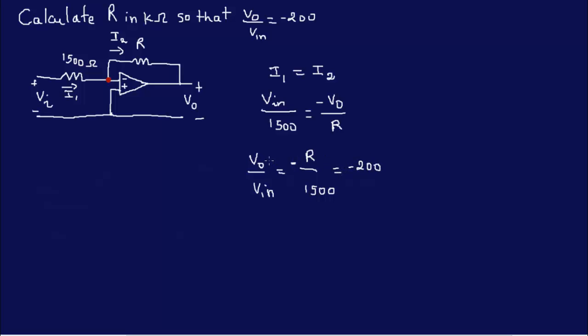Therefore R is equal to 200 times 1500, and this is 300k.